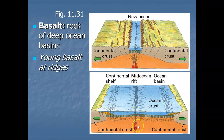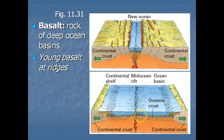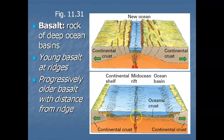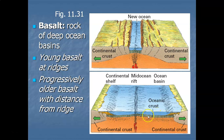What geologists found that further confirms plate tectonics is that they dated the age of the basalt. Right at the mid-ocean ridge there's brand new basalt, and as the plate spreads, that basalt becomes progressively older — almost like a conveyor belt. So you have very young basalt right at the mid-ocean ridge and then progressively older and older basalt with distance from the ridge.